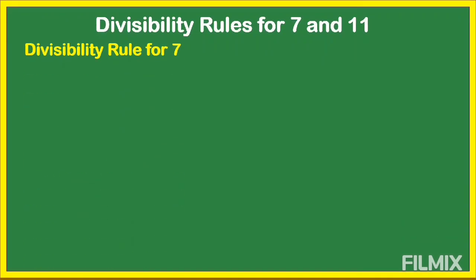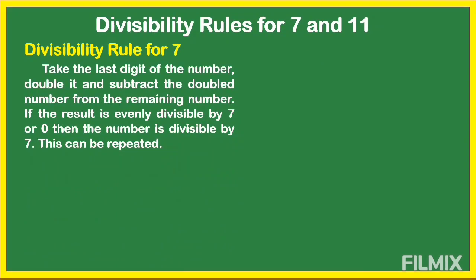Next is the divisibility rule for 7. Take the last digit of the number, double it, and subtract the doubled number from the remaining digits. If the result is evenly divisible by 7 or equals 0, then the number is divisible by 7. This process can be repeated.